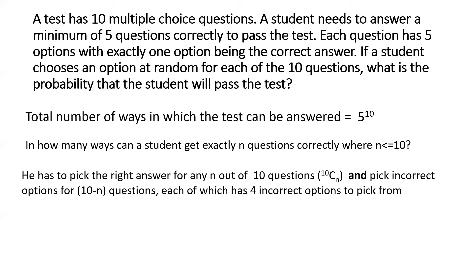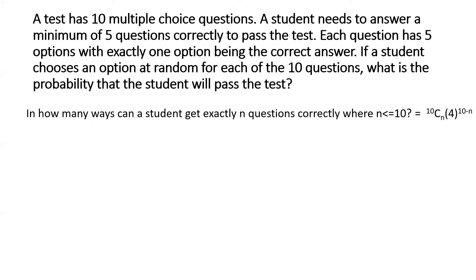And pick incorrect options for the remaining 10 minus n questions. And each of those questions would have a total of 4 incorrect options to pick from. So the total number of ways in which a student can get exactly n questions answered correctly is 10Cn multiplied by 4 to the power 10 minus n.